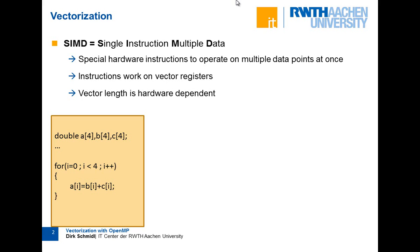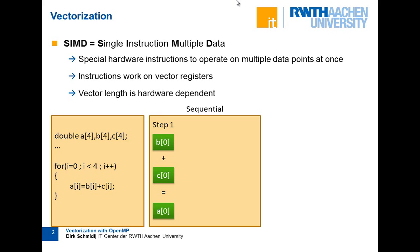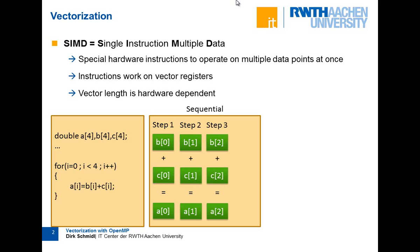In this example, let's say we have a small for loop running from 0 to 3, and you just want to add vector B and C and store the result in A. In a sequential execution, you take element 0 of these two vectors, add them, store them in element 0 of vector A. In the next step you take the next element, then element 2, then the last element — all these steps one after the other.